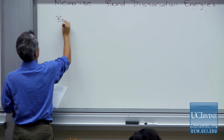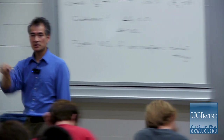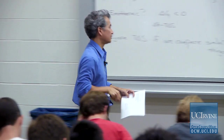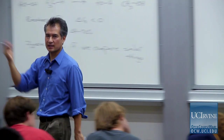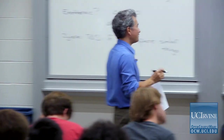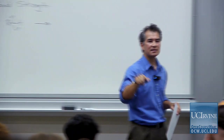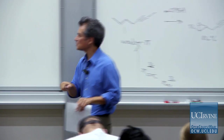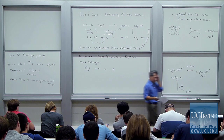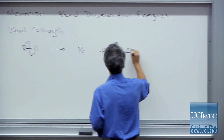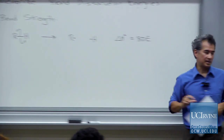Bond dissociation energy is defined as bond strength, and both relate to the following equation: for an R-H bond, a bond dissociation energy — BDE — refers to a homolytic process that gives you two radicals, by definition. The enthalpy change associated with this reaction at standard state is defined to be the bond dissociation energy. That's super important.